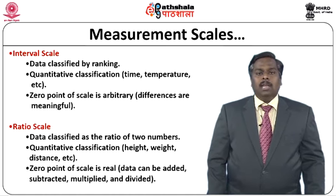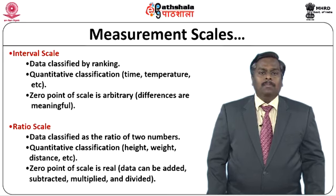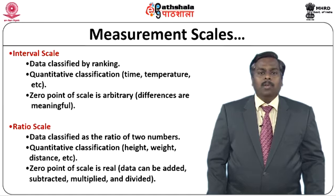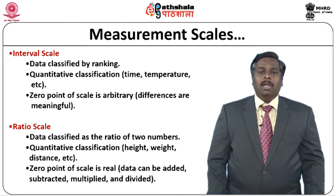The last type of measurement scale is ratio scale. In ratio scale, we are taking data and classifying it as the ratio of two numbers. We can take two different parameters and use them for providing a quantitative classification — for example, height and weight, or height and distance. Here, the zero point of scale is going to be real information, so data can be added, subtracted, or multiplied. Some kind of arithmetic operation may be performed on ratio scale values.